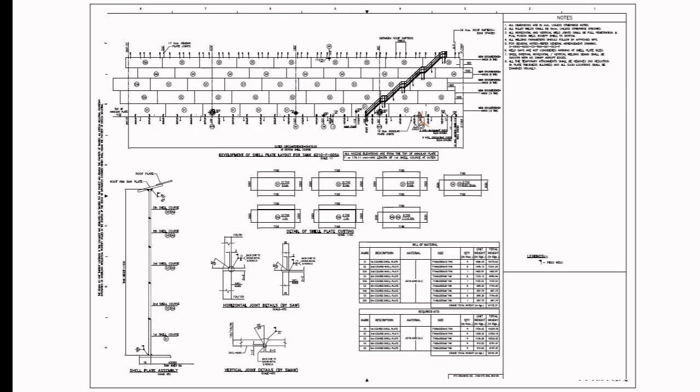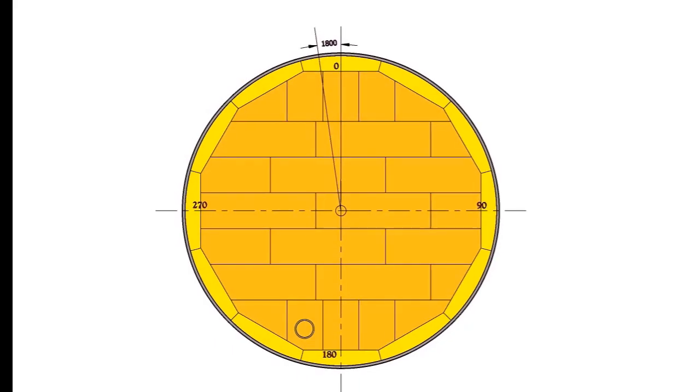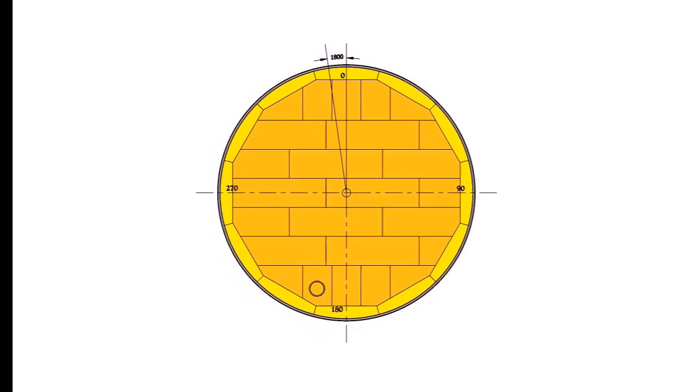Study the shell plate layout. First of all, check if the layout is clockwise or anti-clockwise. See the shell course S4. Mark the distance 1,800 mm on the annular plate radial.